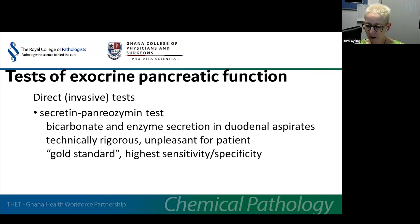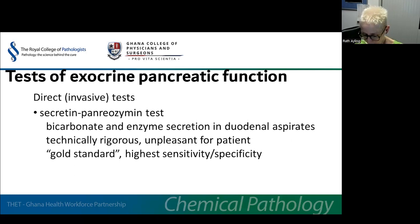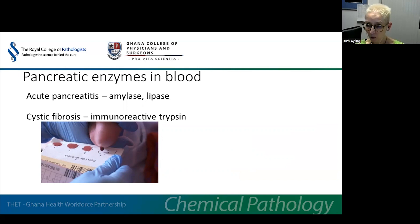The gold standard tests of exocrine pancreatic function are direct invasive tests, such as the secretin-pancreaticozymin test. This involves placement of a tube into the duodenum and administration of secretin to induce fluid secretion and pancreaticozymin to stimulate enzyme production. Fluid is withdrawn from the duodenum and the content of bicarbonate and enzymes measured. This test has the greatest sensitivity and specificity, but it's difficult to perform and unpleasant for patients and now rarely used in routine practice. It's also possible to measure pancreatic enzymes in blood — standard practice in acute pancreatitis where amylase or lipase are measured — but it's rarely diagnostic in the investigation of chronic pancreatitis or pancreatic insufficiency.